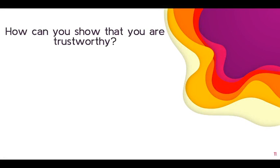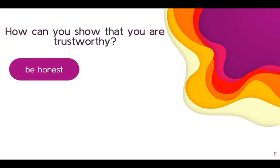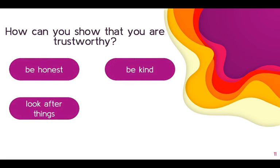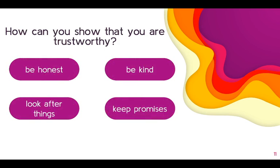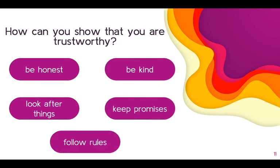Generally speaking, there are five things that we can do to show someone that we are trustworthy: be honest, be kind, look after things, keep promises, and follow rules.